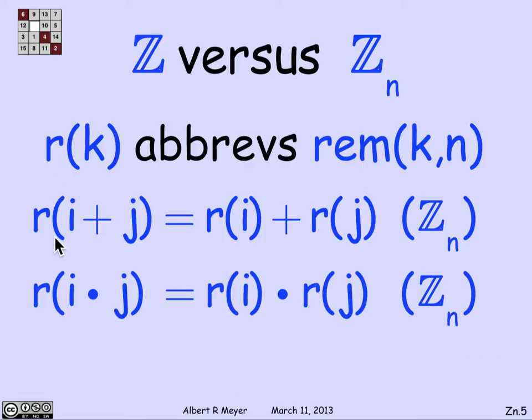This operation, by the way, this connection between mathematical structures, the structure of the integers under plus and times and Z_n under plus and times, is called a homomorphism. r, in this case, is defining a homomorphism from Z to Z_n. That's a basic concept in algebra that you'll learn more about if you take some courses in algebra. But I'm just mentioning it for cultural reasons. We're not going to exploit it any further or look further into this idea.